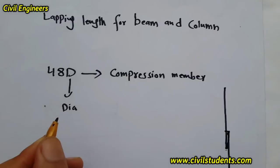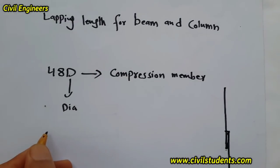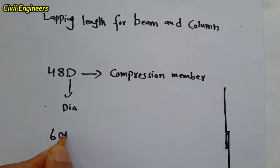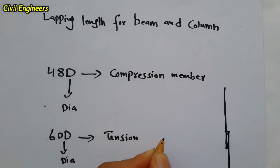For the tension member we can take the formula 60D, where D is the diameter of steel which we are using in the tension member.